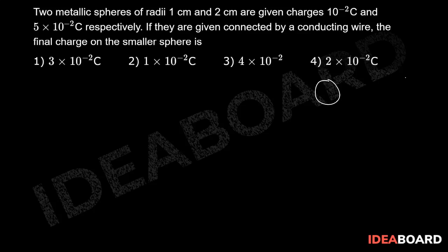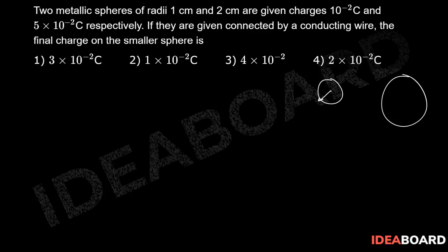So this is a small sphere, this is a bigger sphere and the radius, take this as r1. We are provided that r1 is 1 centimeter, so 10 to the power minus 2 meter, and r2 is 2 centimeters, which will be 2 into 10 to the power minus 2 meters.